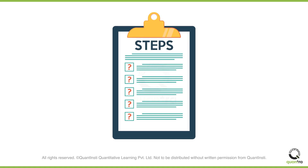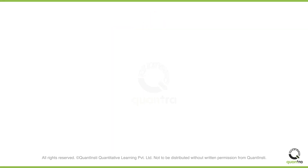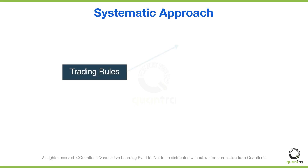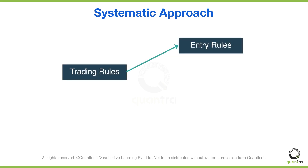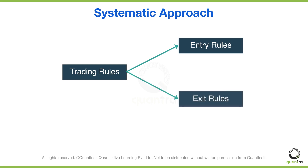John could have easily overcome these challenges if he had used a systematic approach to options trading. He could have well-defined rules regarding when to initiate a particular option strategy, and set stop loss and take profit levels, so that he knew when to exit if the trade went with or against him.